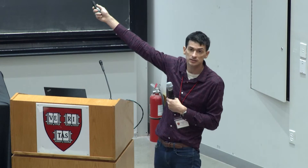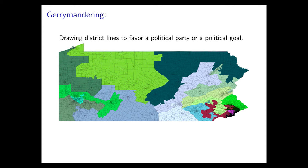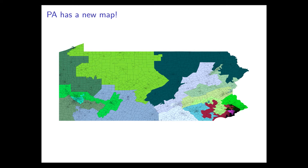Gerrymandering, roughly defined, is sitting down and trying to intentionally draw a map to optimize some partisan goal. Let me emphasize this is different from the partisan symmetry fairness we heard about before. In this talk, the problem we're trying to solve is figuring out when we can tell that somebody has intentionally drawn a map to be biased in a partisan way. We actually have a new map in Pennsylvania, used in the 2018 election and to be used again in 2020. There was a lawsuit — in which I was an expert witness — that changed this map. I'll tell you about the kind of mathematical and statistical evidence you can bring in cases like this.